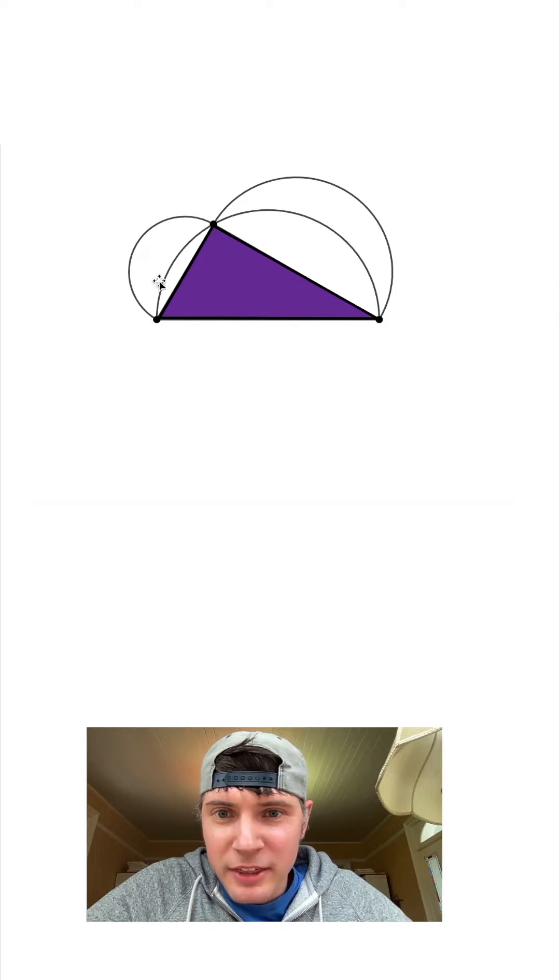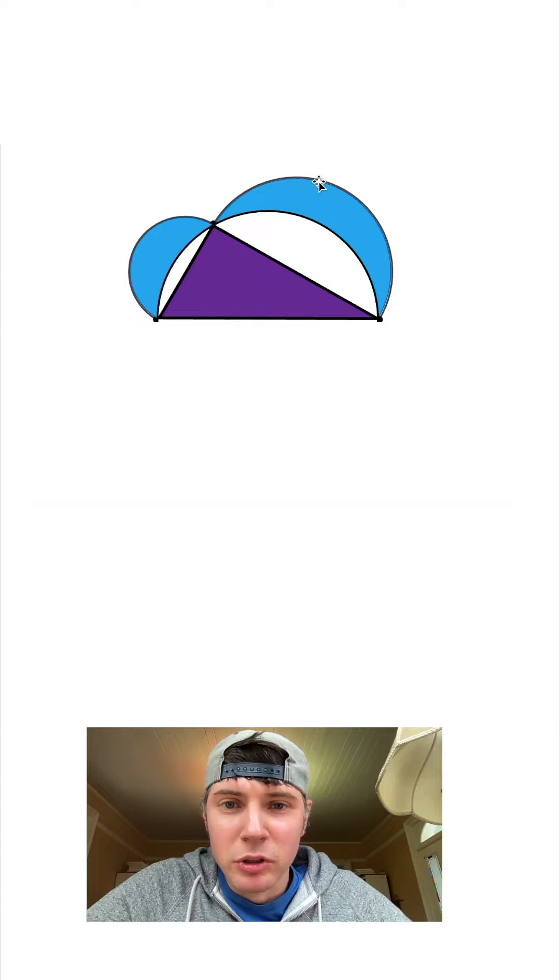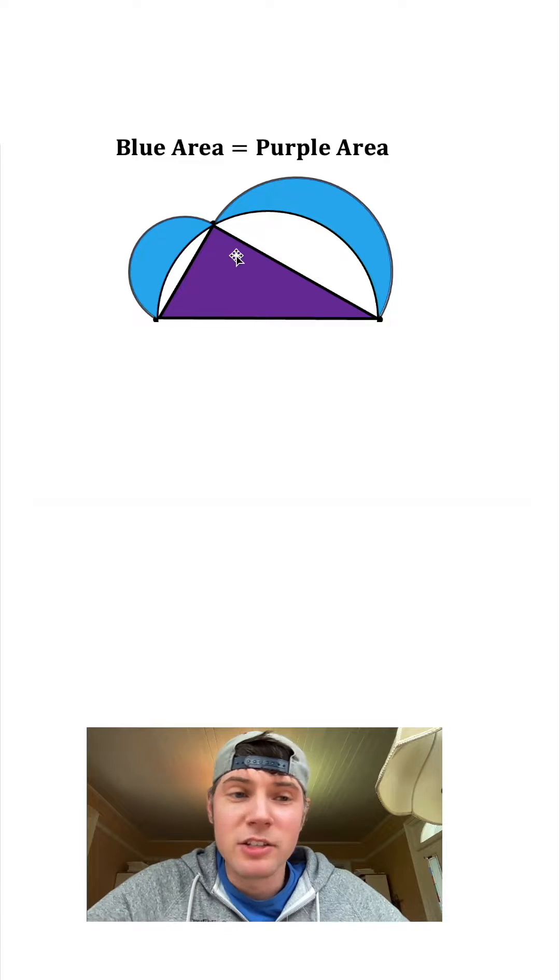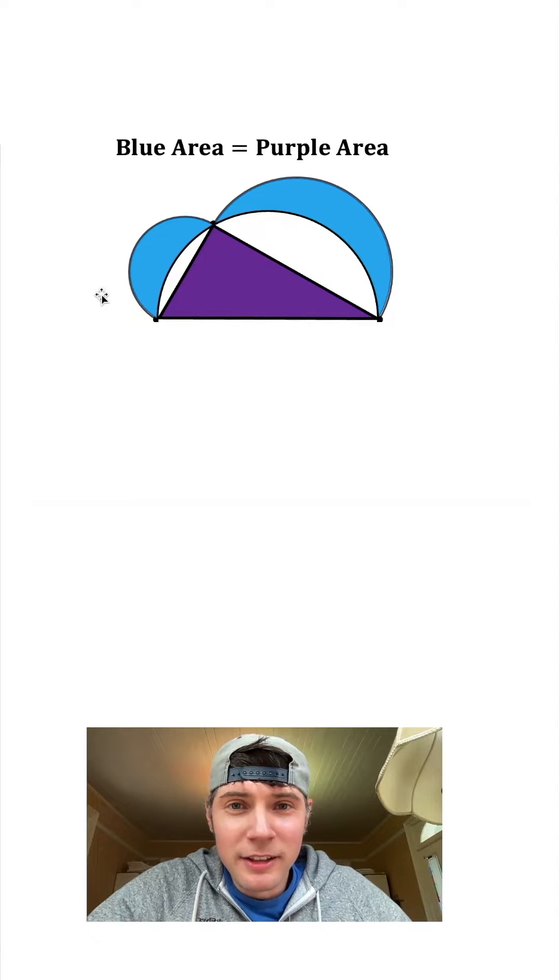So if I color the triangle purple and then I color these two outer pieces blue, the blue area is equal to the purple area. It's always true no matter where we put the dot and let's prove it.